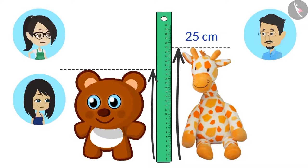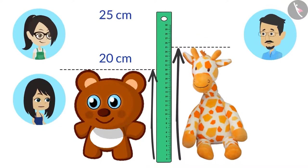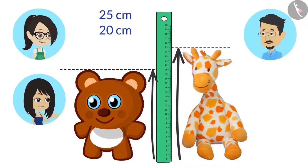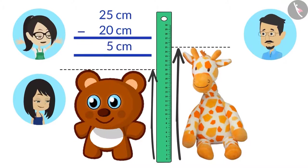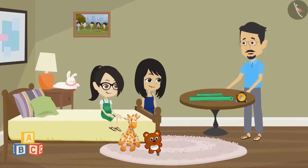Your bear is 20 centimeters tall. Can you both tell how much shorter the bear is than the giraffe? Yes, Uncle. We will subtract the height of the bear from the height of the giraffe. The height of the giraffe is 25 centimeters and the height of the bear is 20 centimeters. Subtracting 20 centimeters from 25 centimeters leaves us with 5 centimeters. This means the giraffe is 5 centimeters taller than the bear. You both answered correctly.